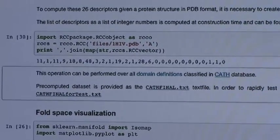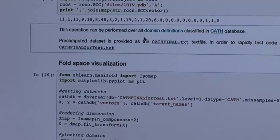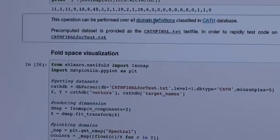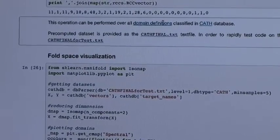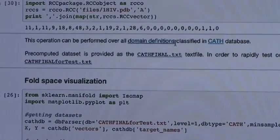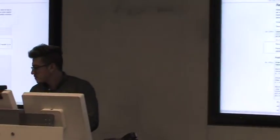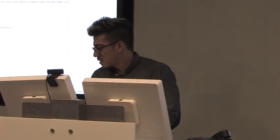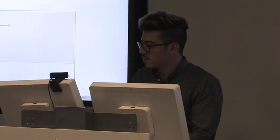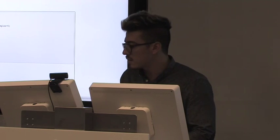So you can download all the domain definitions of these databases, CATH and SCOP. And I have this pre-computed database. You have the domain ID, the 26 dimensional vector, and the classification under this database. So you can use scikit-learn to do a lot of magic with this.